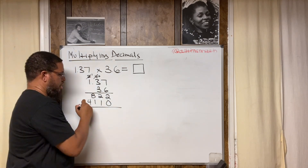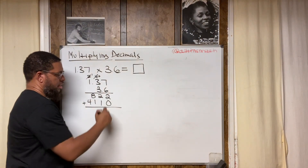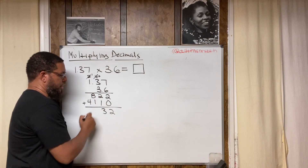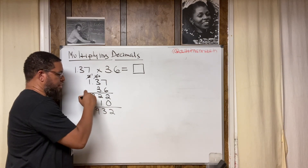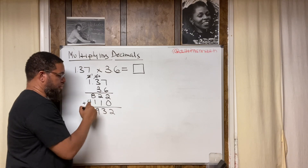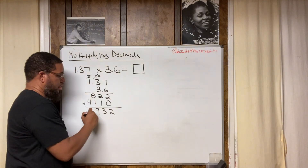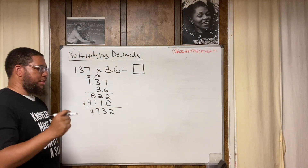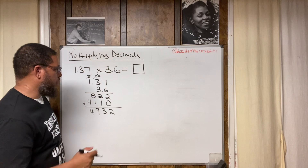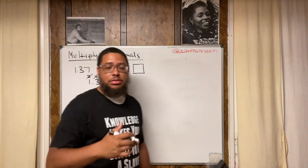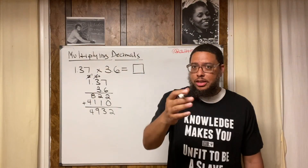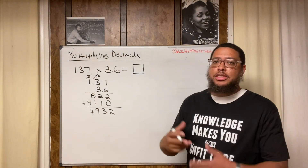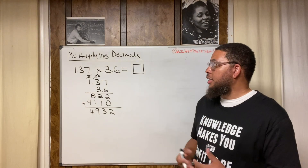Now, there's a step you use to know where to put the decimal point. But imagine your child, grandchild, niece, or nephew forgot what that step was. This is what the textbook was explaining — it said: go back to the original two factors and think about what two whole numbers each decimal is in between.